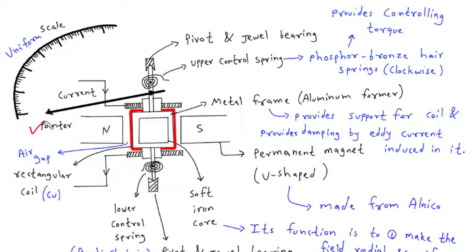Pointer: The pointer is attached to the rectangular coil and moves along a uniform scale. As the coil experiences a rotational force due to the interaction between the magnetic field and the current-carrying wires, the pointer rotates and indicates the magnitude of the current being measured on the scale.